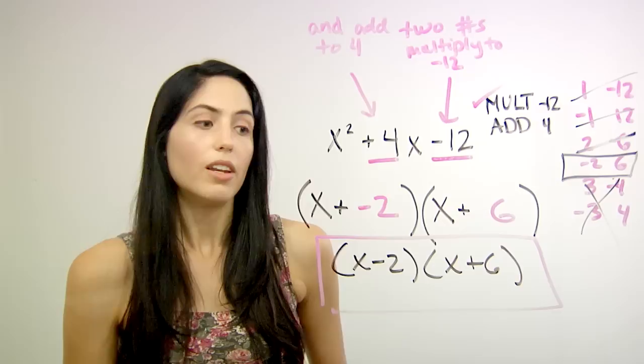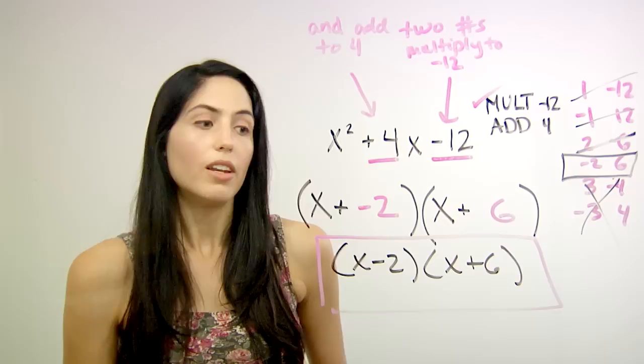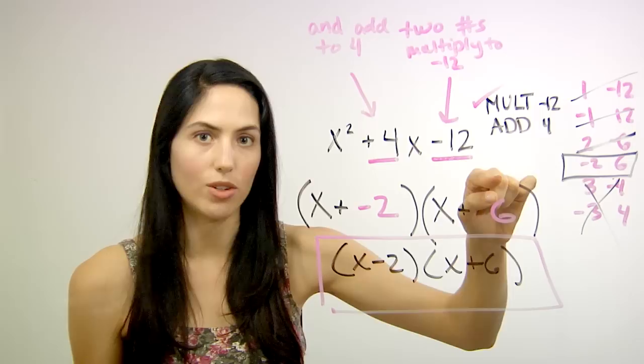Now if you want to, you can always check your factoring answer by multiplying this out, foiling it out, and checking to make sure it's the same as your original quadratic.